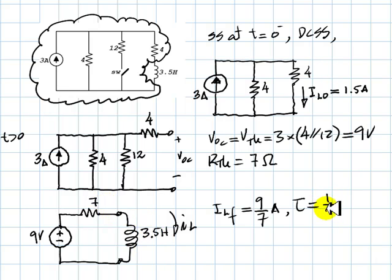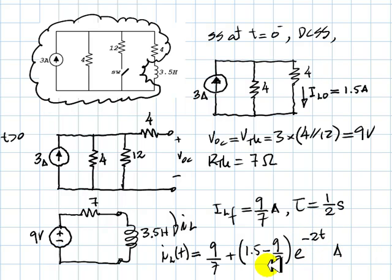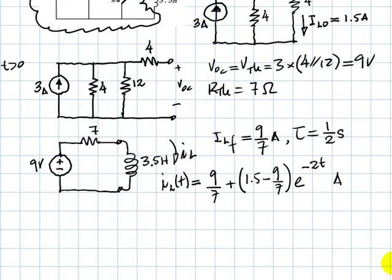That current as a function of time has a final value of 9/7, and an exponential that has an initial value of 1.5, a final value of 9 over 7, and a time constant of 1 half. This is the current in the inductor as a function of time.